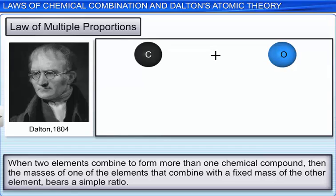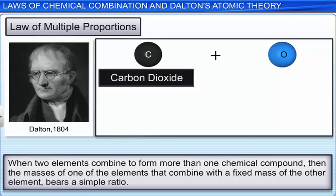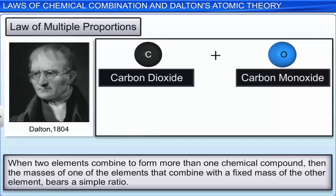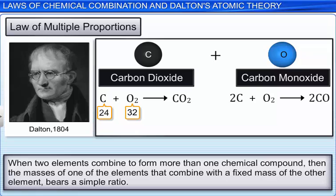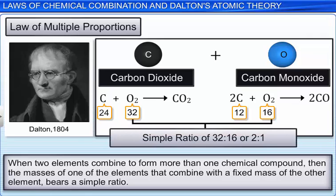For example, when the elements carbon and oxygen combine, two compounds, namely carbon dioxide and carbon monoxide can be formed. As seen in the equation for carbon dioxide, 24 parts by mass of carbon combine with 32 parts by mass of oxygen. Whereas, when carbon monoxide is formed, 12 parts by mass of carbon combine with 16 parts by mass of oxygen. These masses of oxygen bear a simple ratio of 32 is to 16 or 2 is to 1.